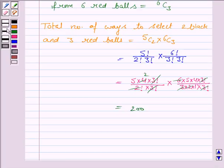Hence, the total number of ways to select 2 black and 3 red balls is 200. And this is the required answer. This completes the question. Hope you enjoyed the session. Goodbye and take care.